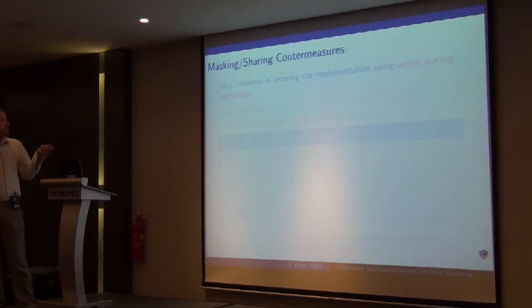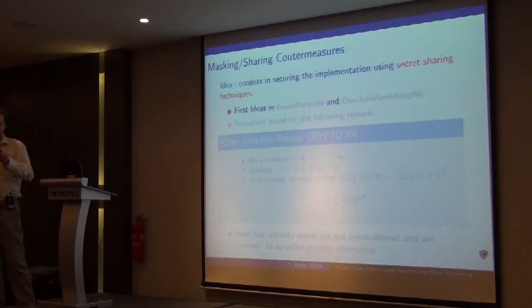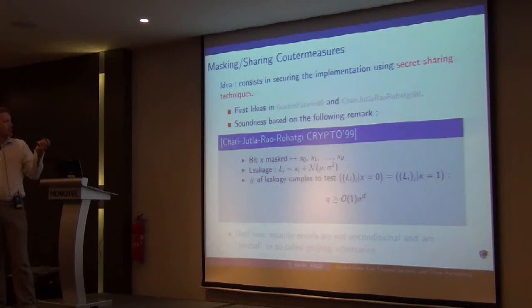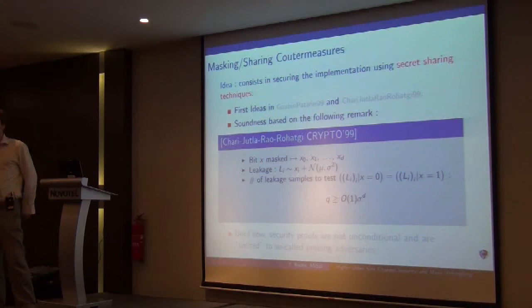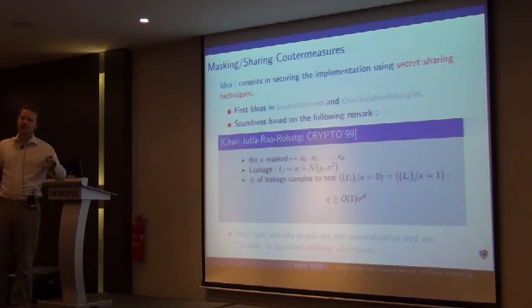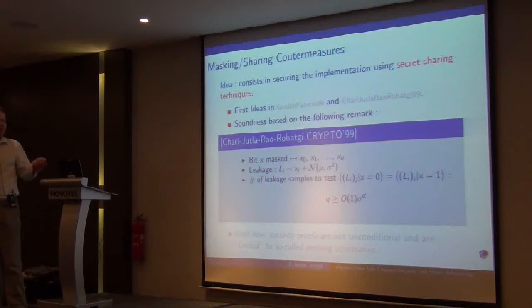What are masking or sharing countermeasures? The basic idea is, instead of manipulating the intermediate variable of a cipher, we will manipulate them through a sharing of them, a secret sharing of them, and that will have a manipulation that is independent from the secret. What is nice about this masking technique is when intermediate variable is manipulated through d shares, observing the d shares in order to break the cipher, in order to gain information about the secret, costs have a complexity that is exponential in the order, in the number of shares.